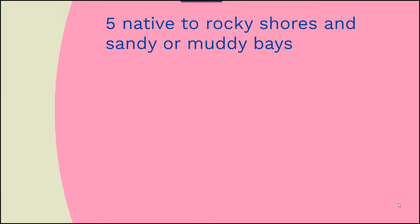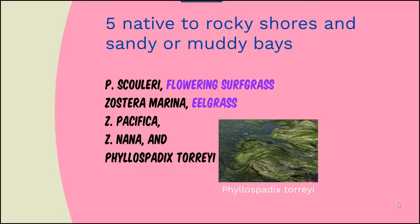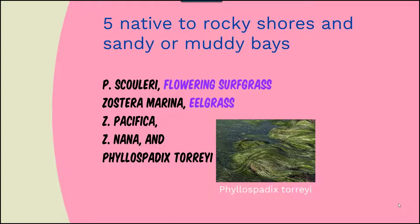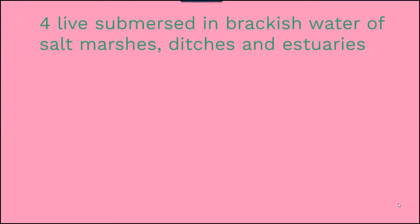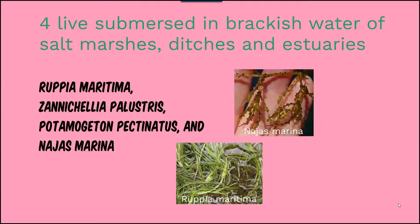In San Diego there are five native seagrass species on rocky shores and in sandy or muddy bays, including flowering surf grass and eelgrass, which are prevalent, plus a few others. There are four species that live submerged in brackish water of salt marshes and estuaries, including species such as Ruppia, Zostera marina, and a couple of others.